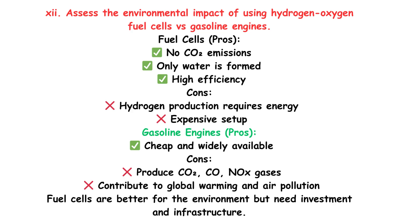Long Question: Assess the environmental impact of using hydrogen-oxygen fuel cells versus gasoline engines. Fuel cells — pros: no CO₂ emissions, only water is formed, high efficiency. Cons: hydrogen production requires energy, expensive setup. Gasoline engines — pros: cheap and widely available. Cons: produce CO₂, CO, NOx gases, and contribute to global warming and air pollution. Fuel cells are better for the environment, but need investment and infrastructure.